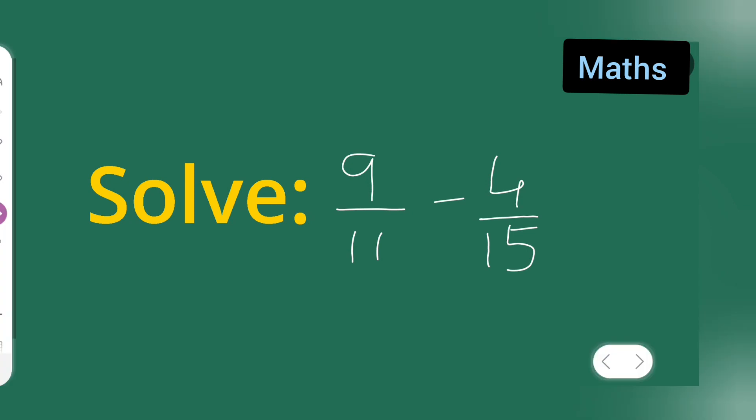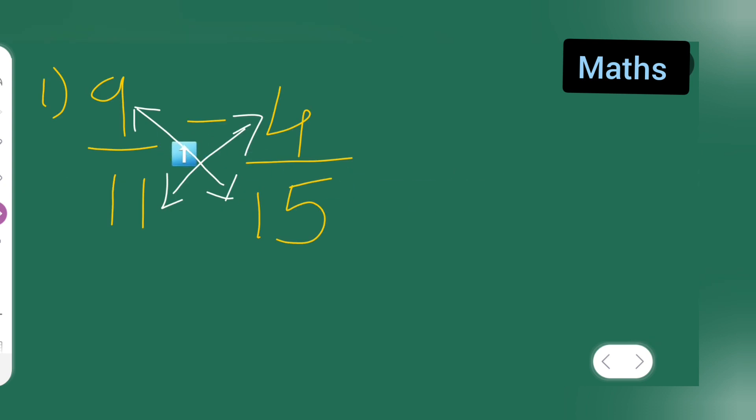So what we have to do is we have to subtract this. What we need to do is first thing is we have to cross multiply. We have to cross multiply 4 with 11, 9 multiplied by 15, 4 multiplied by 11.